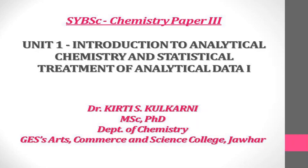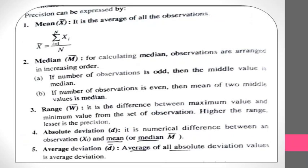The central tendency is also called as mean, and how it is applied we will see. Precision can be expressed by mean, median, and mode — so we will see these definitions. The first one is called as mean. It is denoted by x̄ and it is the average of all the observations. How to find out mean: you have to take all the values, sum them up — that means you have to add these values — and then you have to divide by the number of observations.